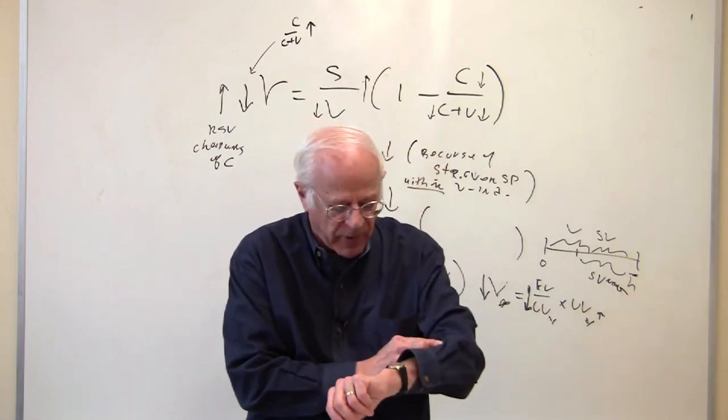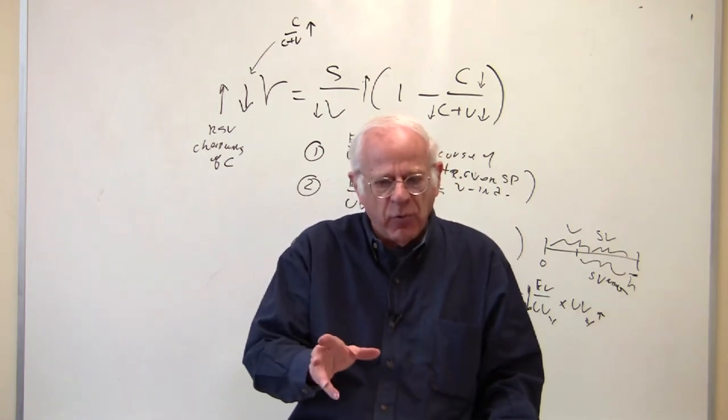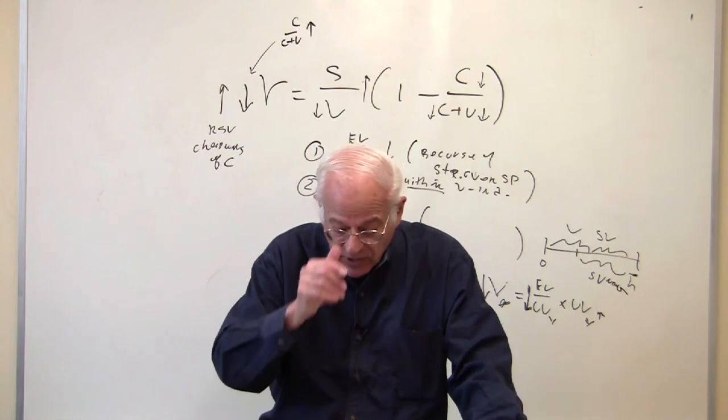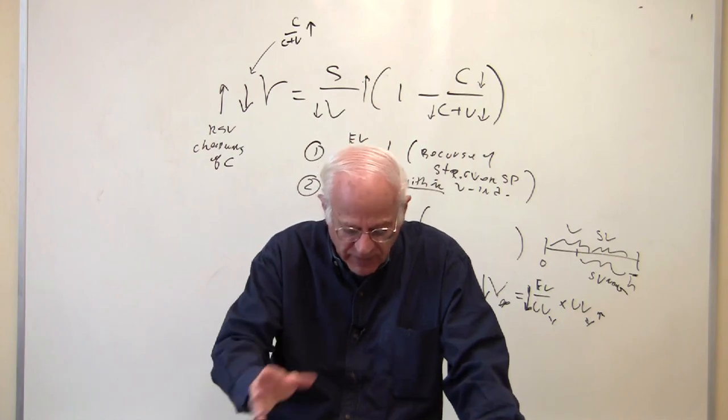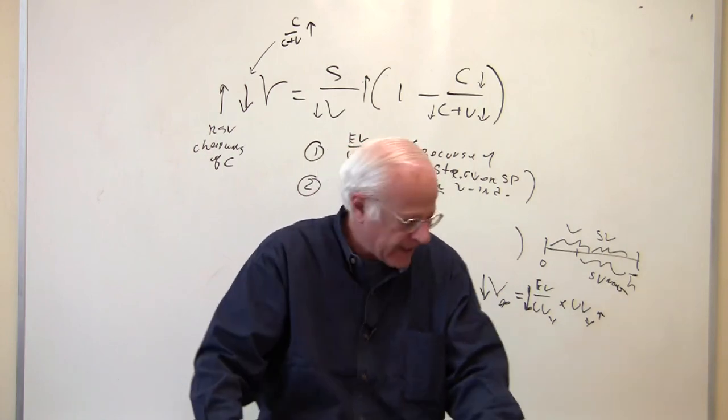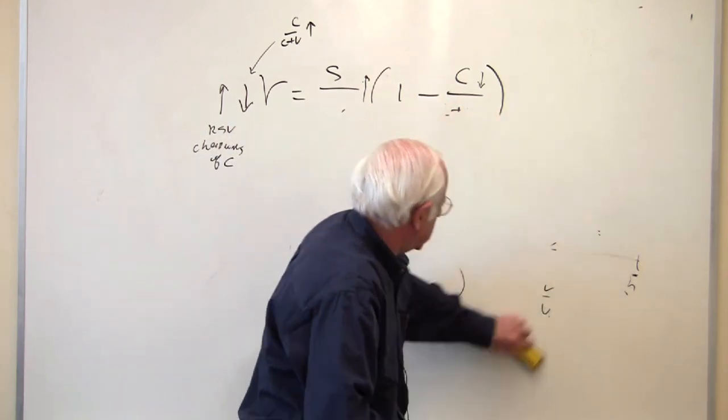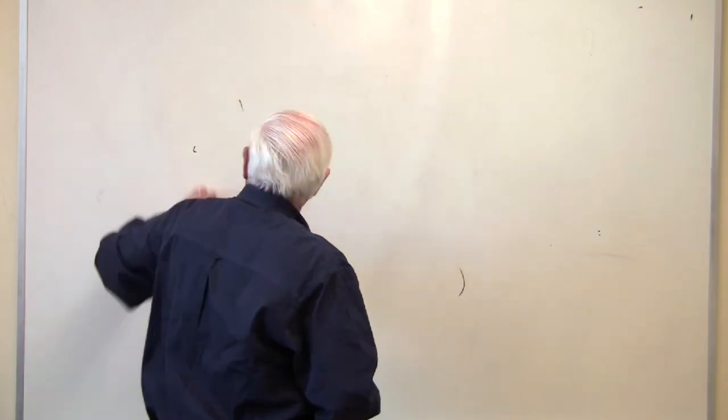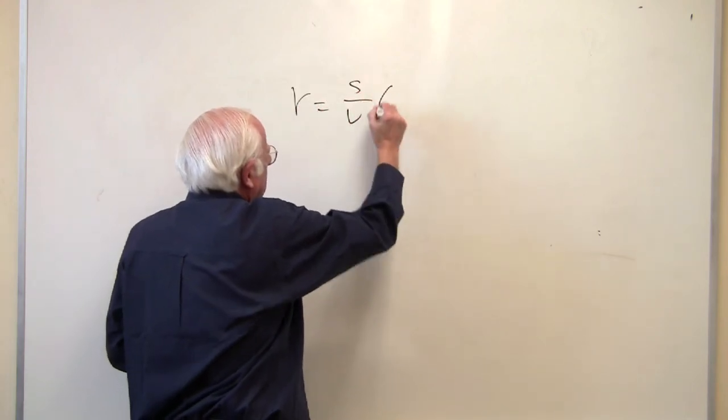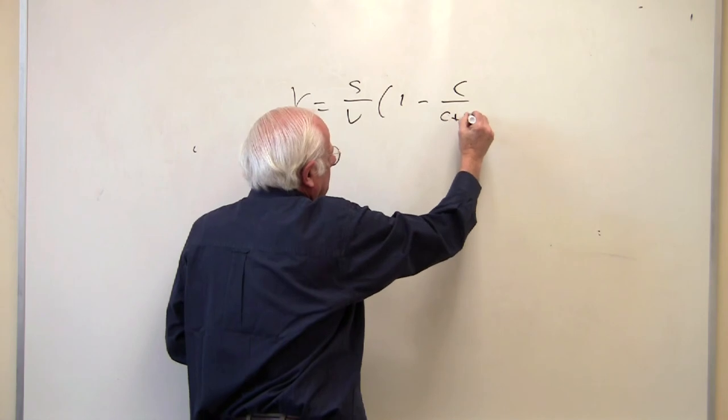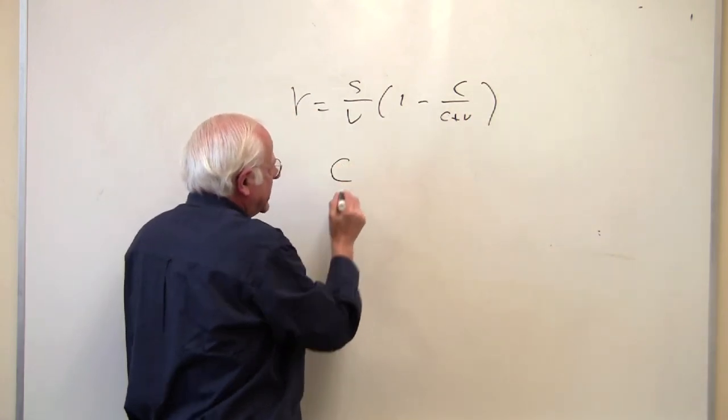I want to come back to one last point on this. I want to come back to the cheapening of C, since it's very important, it's very controversial within the Marxian literature, but it's very important in terms of this cheapening of C in particular, but cheapening of C and V. I want to focus on the cheapening of C. I'm just examining this C for a moment.